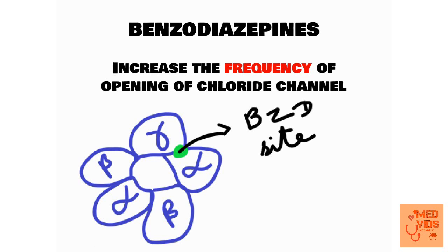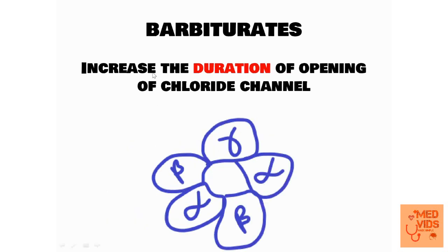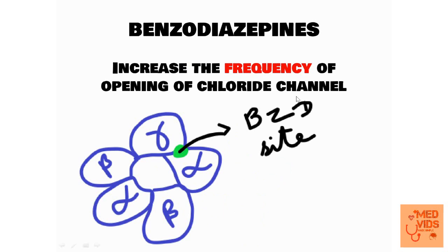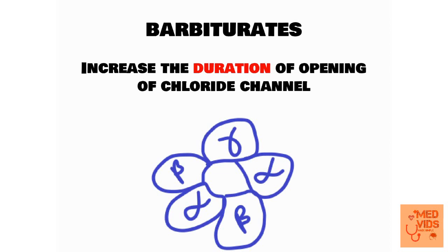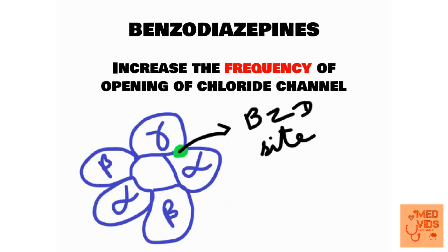To summarize: barbiturates increase the duration of opening of the chloride channel, whereas benzodiazepines increase the frequency of opening of the chloride channel. The site of action is also different — benzodiazepines bind between alpha and gamma subunits, barbiturates bind on alpha or beta subunits. Don't worry — watch this video multiple times and you'll get it.